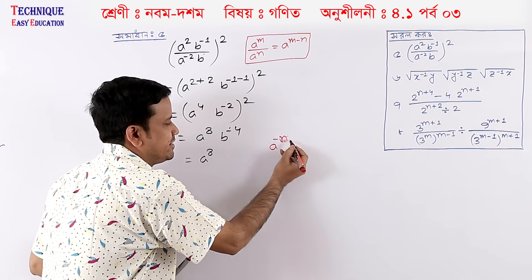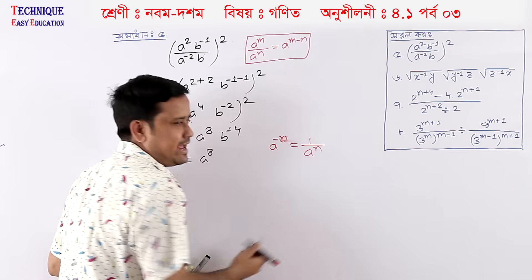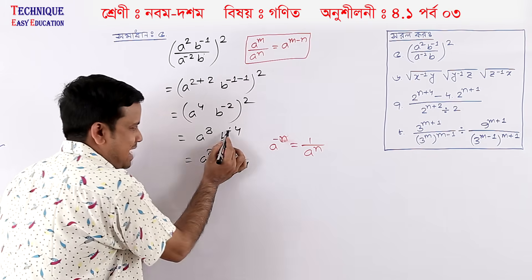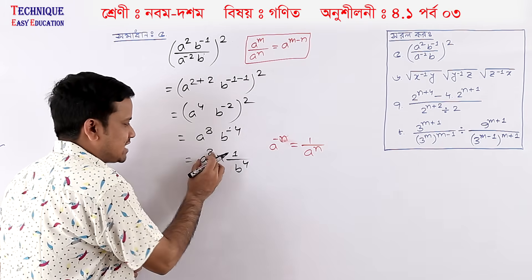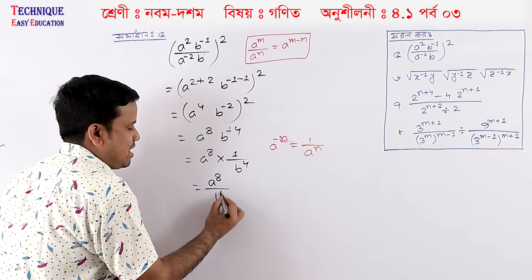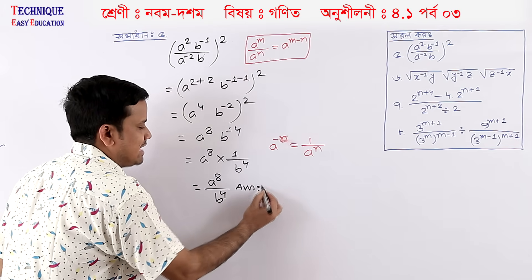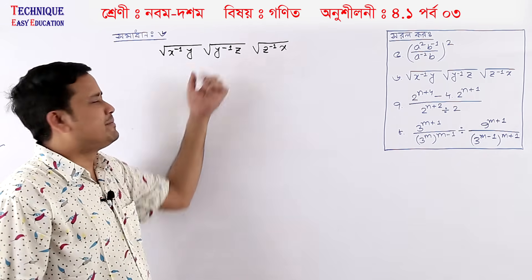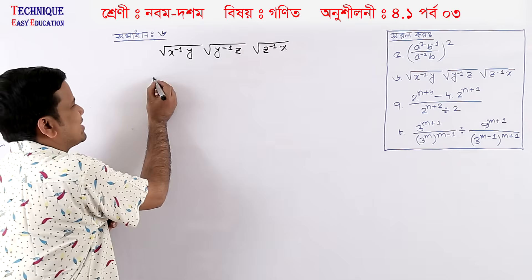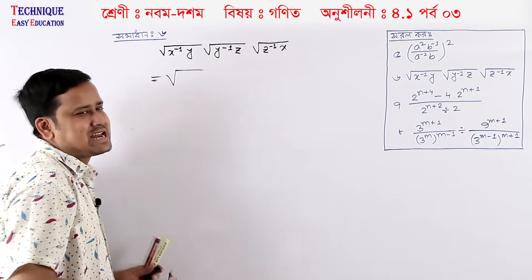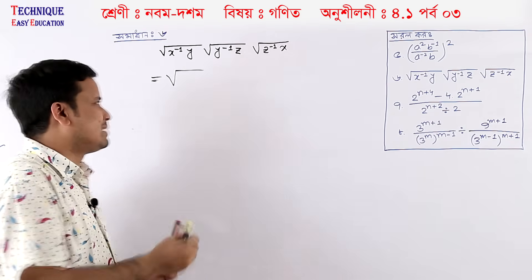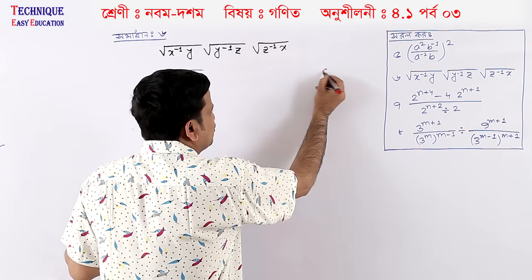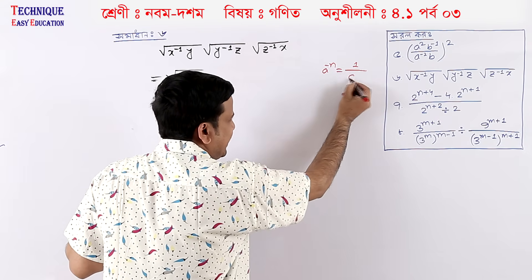a to the power minus n. So the sutra is: a to the power minus n equals one by a to the power n.